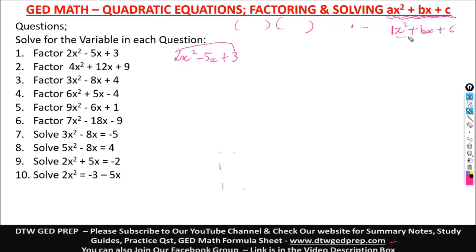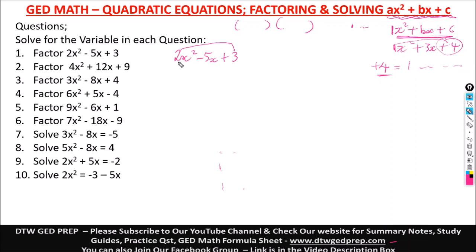When I was teaching the case where the coefficient is 1 — like x squared plus 3x plus 4 — we use the constant 4 directly to find factors, because 1 times 4 is still 4. But here the coefficient is no longer 1, it is 2. So we do 2 times 3, and remembering the sign — it gives us positive 6.